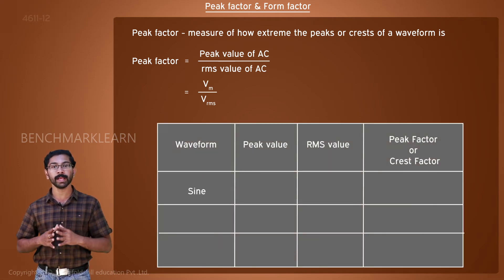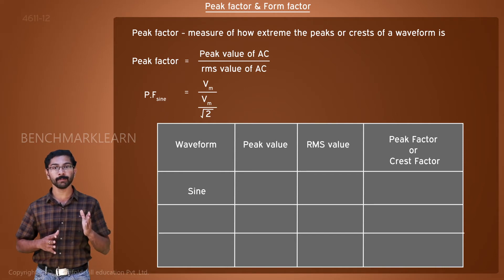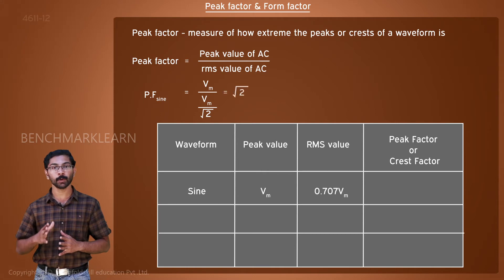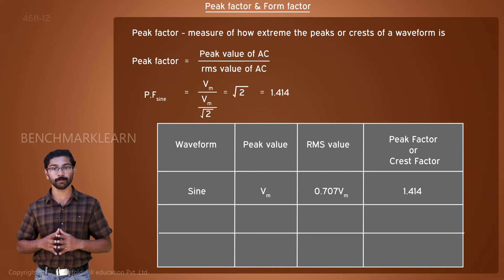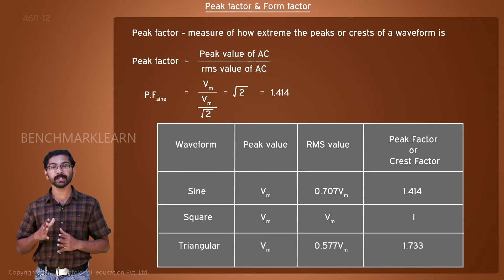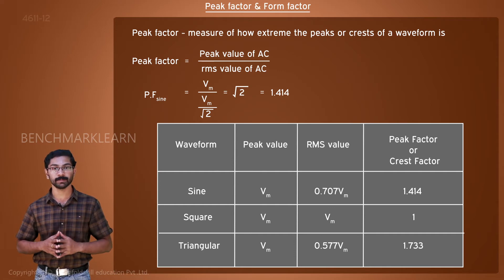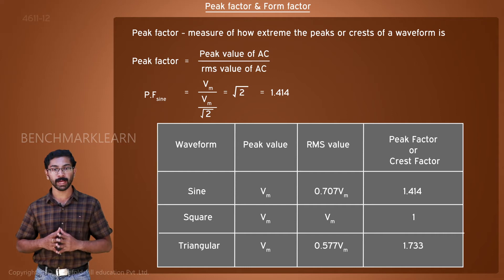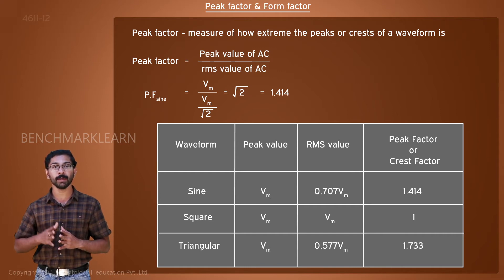For sinusoidal AC voltage or current, peak factor is equal to Vm divided by Vm/√2, which is equal to √2, which is equal to 1.414. Peak factor is a ratio of similar quantities, whether voltage or current, so it is dimensionless. The minimum value of peak factor is 1, as the RMS value can never exceed the maximum value.